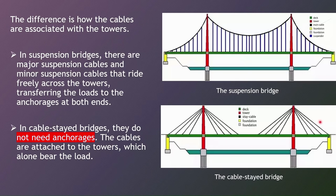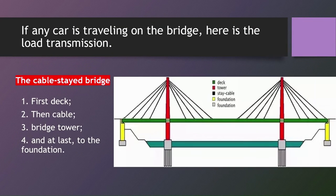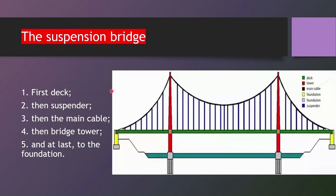The towers alone bear the load. Now let's see the load transferring mechanism of the two. In cable-stayed bridges, if any car or human travels on the bridge, the load is first carried by the deck, then to the cable, then to the bridge tower, and lastly to the foundation. In the case of suspension bridges, the load is carried from the deck to the suspender, then to the main cable, then to the bridge tower, and finally to the foundation.